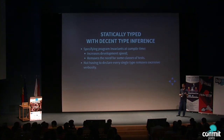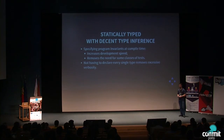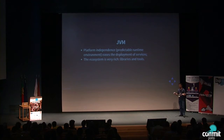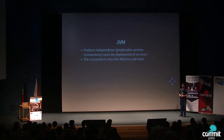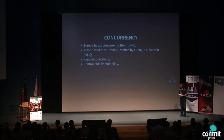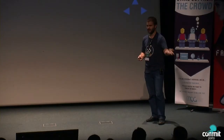We also wanted a language with decent type inference — we didn't want the excessive verbosity of specifying a type for every single variable and return value. We also wanted to stick with the JVM, because we believe platform independence helps with deploying services in different environments, and the ecosystem is already very rich. There are various libraries and tools we can use on top of Scala that come from the Java world.